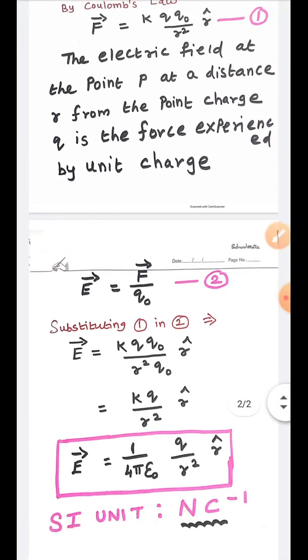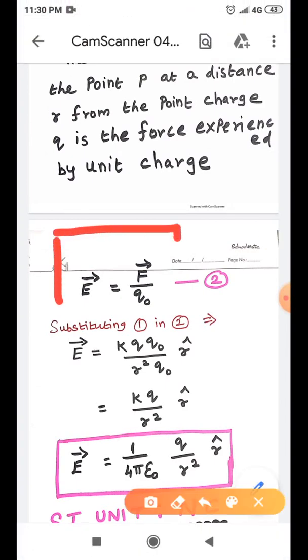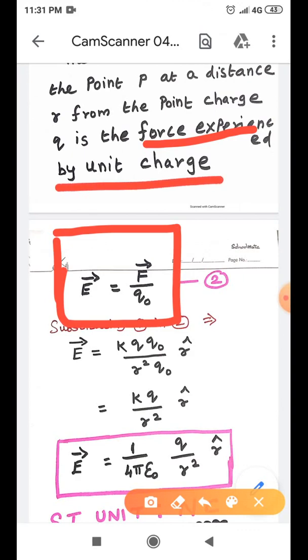So, this definition can be rewritten mathematically. E vector which is equal to F vector divided by q0, then the difference is the force experienced by unit charge, force experienced by unit charge. Right.